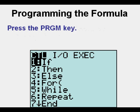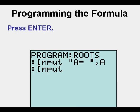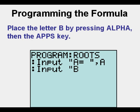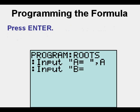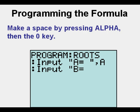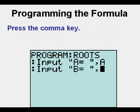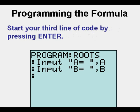Press the Program key and arrow once to the right for the input-output menu. Press Enter. Place a quotation mark by pressing Alpha, then the Plus key. Place the letter B by pressing Alpha, then the Apps key, just to the right of the Math key. Go to the Test menu by pressing Second, then Math. Press Enter. Make a space by pressing Alpha, then the Zero key. Make the right quotation mark by pressing Alpha, then the Plus key. Press the Comma key. Create the B character by pressing Alpha, then the Apps key.